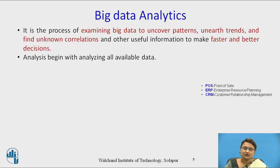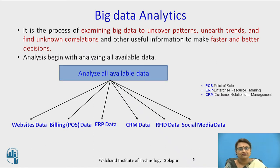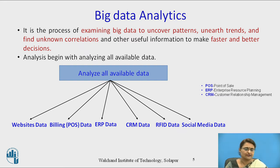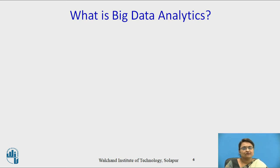For this analysis, we begin by analyzing all available data. Examples of available data include websites data, billing data which is point-of-sale data, ERP (Enterprise Resource Planning) data, CRM (Customer Relationship Management) data, RFID data, social media data, and more. The data may be available in many other formats as well.